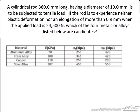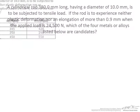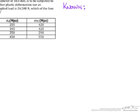So to go ahead and start, let's mark down our known values. We know force is equal to 24,500 newtons. The diameter of the rod is going to be 10 millimeters, making our radius 5 millimeters.